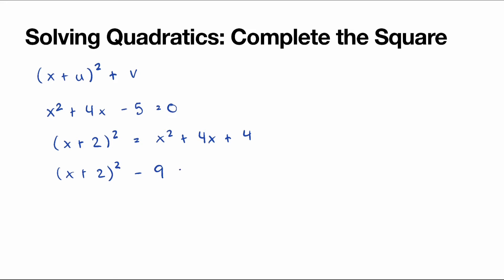And this is equal to 0, so we can begin solving like any other equation. We add 9 to both sides, giving us (x + 2)² = 9. To get rid of the square, we square root both sides. The square root of (x + 2)² is x + 2, and the square root of 9 is 3. However, we can also get -3, so we use the ± sign, because (-3)² is also 9.